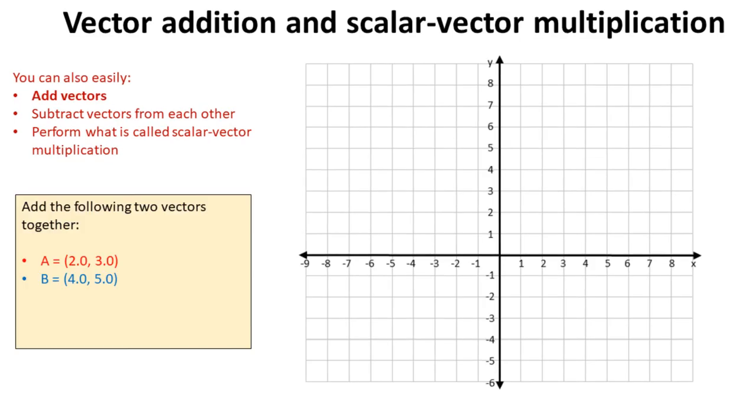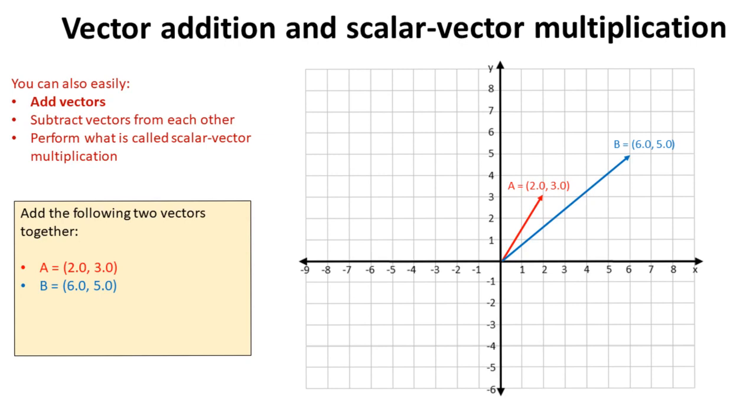So let's start by looking at how to add vectors. We have vector A of (2,3) and B of (4,5). Well, first of all, let's see what they look like. So there's the two vectors plotted on our graph.